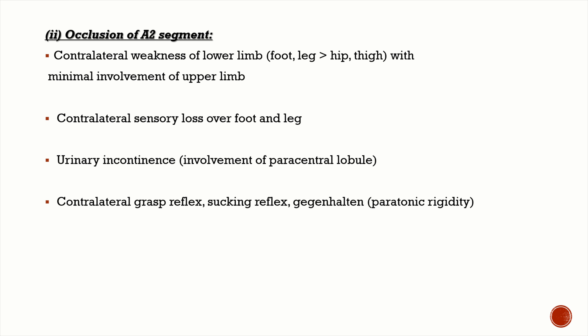If you have occlusion of the A2 segment, you're going to have contralateral weakness that predominantly affects the lower limbs — especially the distal part, that is the foot and the leg, more than the hip and the thigh — with minimal involvement of the upper limb and face. This is in contrast to MCA occlusions, where you have predominant weakness of the face and upper limb with lesser involvement of the lower limb.